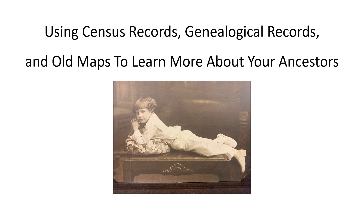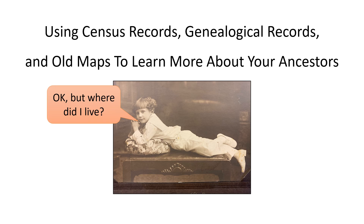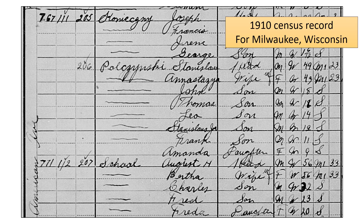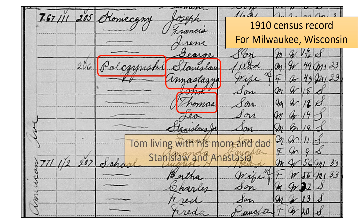Well, that was so much fun. Let's look at another example of how to use census records, genealogical records, and old maps to learn more about our ancestors. Again, we'll start with census records. For this 1910 census record for Milwaukee, we see John's dad, Tom, living with his parents Stanislaw and Anastasia.